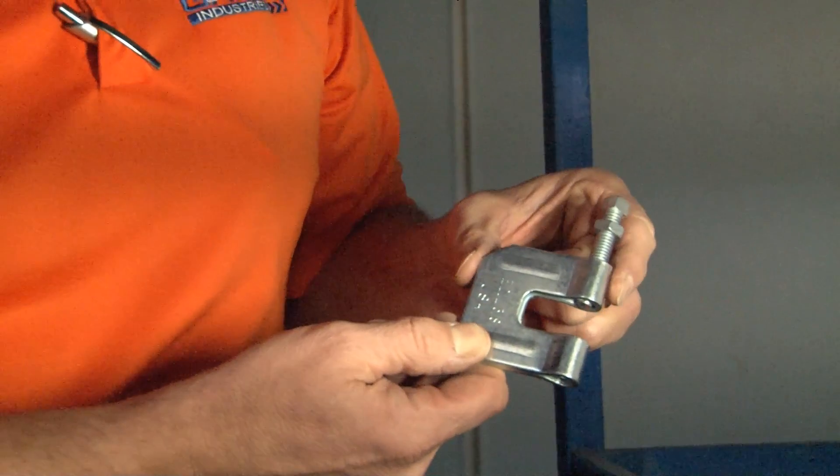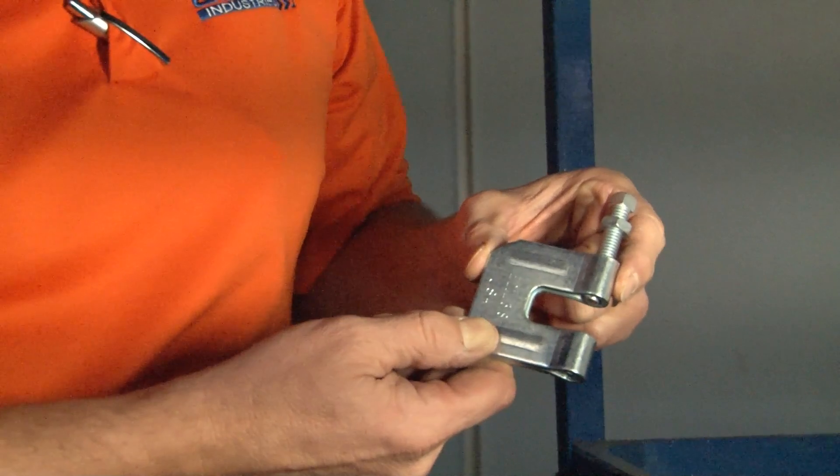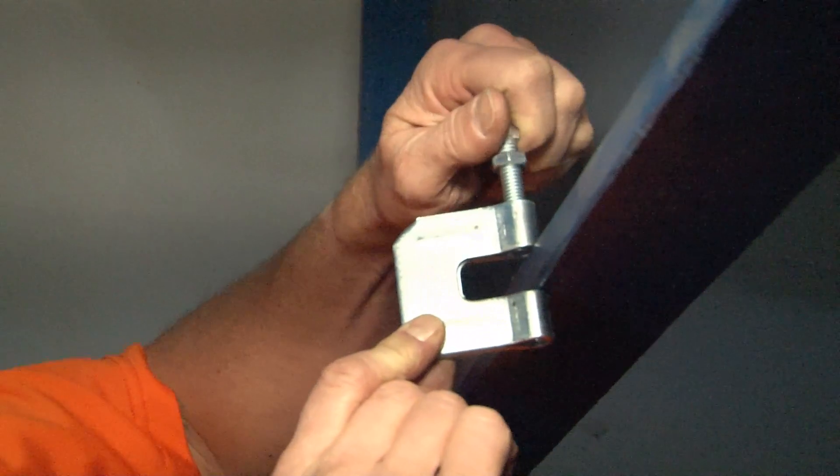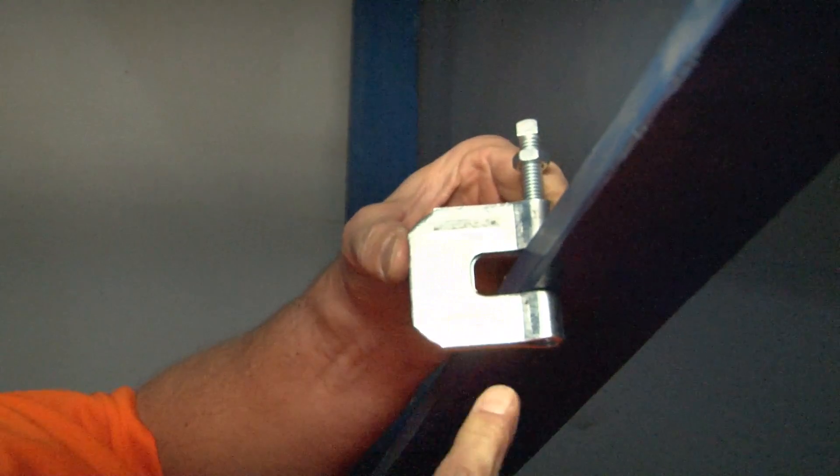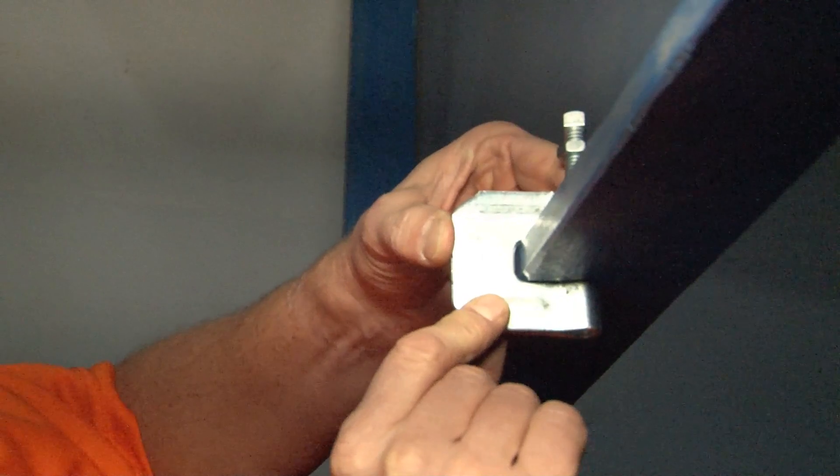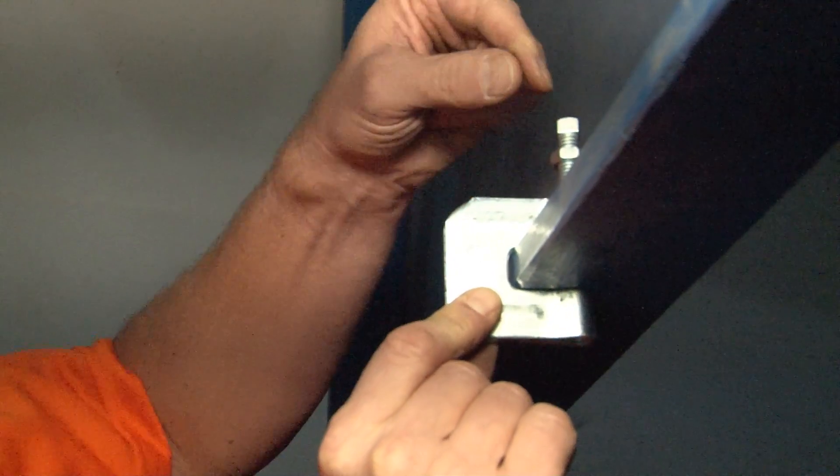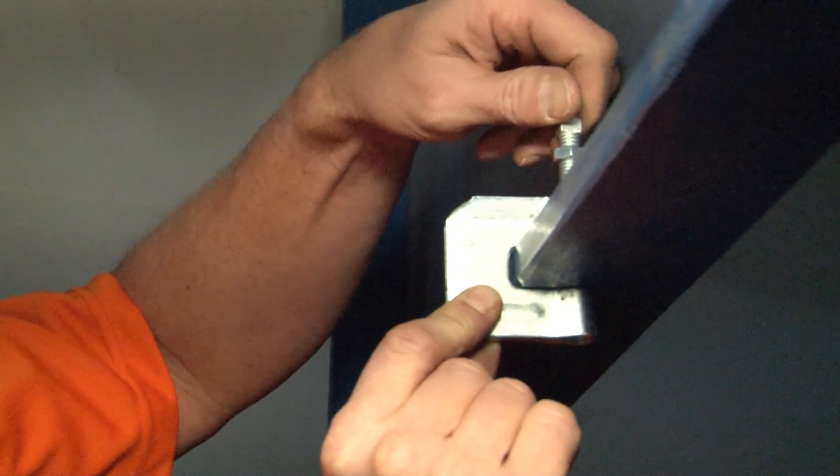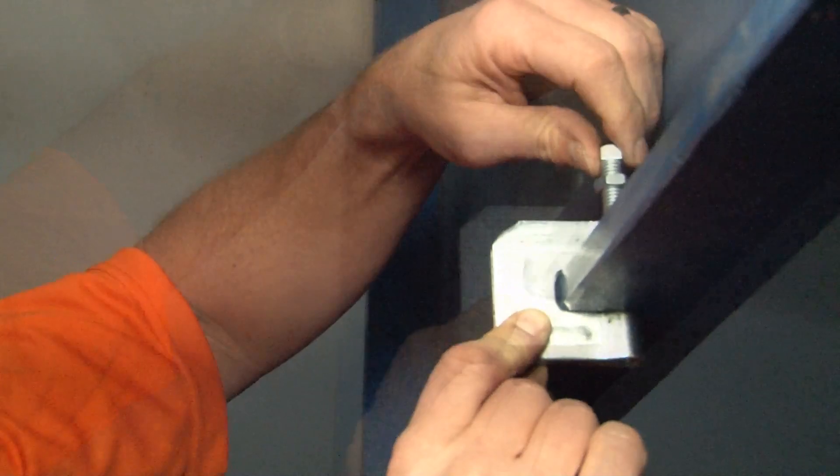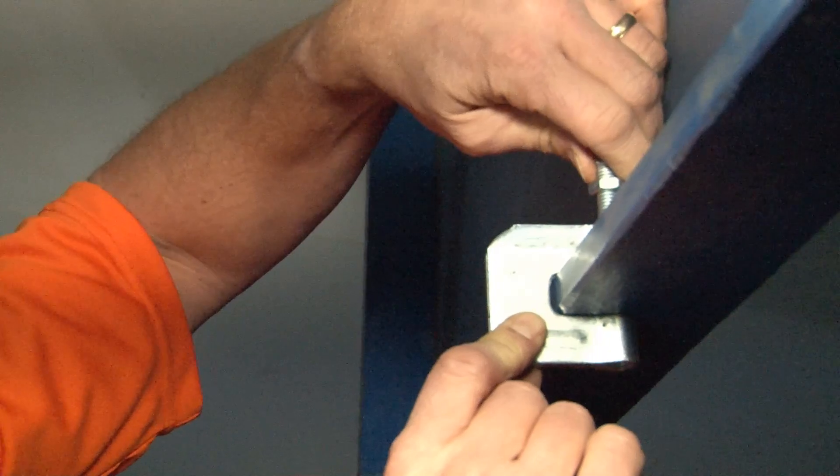The way this product installs is quite easy. You simply align the jaw of the clamp right on the beam where you want to drop the threaded rod. You slide it into place and then using the set screw on the top tighten it down so that it bites against the top of the beam. Make sure you get it nice and tight for a solid install.